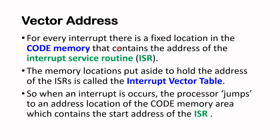For every interrupt there is a fixed location in the code memory that contains the address of the interrupt service routine or ISR. We've seen this with external interrupt zero, where the fixed location is 0003h. The memory locations set aside to hold the addresses of the ISRs are known as the interrupt vector table. When an interrupt occurs, the processor jumps to that code memory location which contains the start address of the ISR.